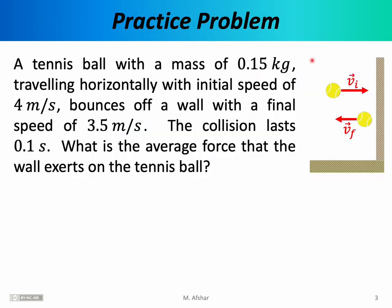Let's use the relationship between force and momentum in a practice problem. A tennis ball with a mass of 0.15 kilograms traveling horizontally with initial speed of 4 meters per second bounces off a wall with a final speed of 3.5 meters per second. The collision lasts 0.1 seconds. What is the average force that the wall exerts on the tennis ball? So we have a tennis ball that initially is moving with velocity vi towards a wall, and then it bounces — the final velocity vector is pointing in a different direction and has a different magnitude. The initial velocity vector has a magnitude of 4, and the final velocity vector has a magnitude of 3.5.